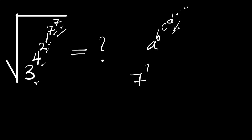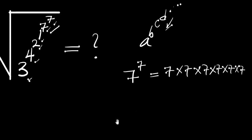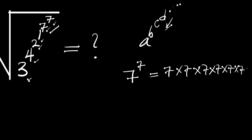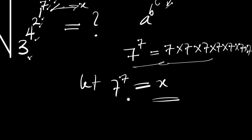So we have 7 power 7, which simply means 7 multiplied in 7 places: one, two, three, four, five, six, then one more making it seven. Finding this number right away is a bit difficult, so we can easily replace it with x. Let 7^7 = x — so these first two numbers we are going to replace with x.